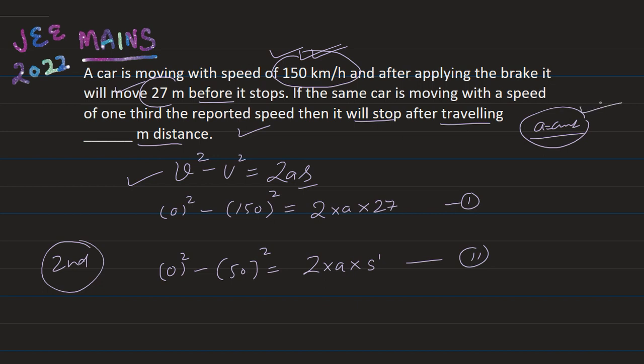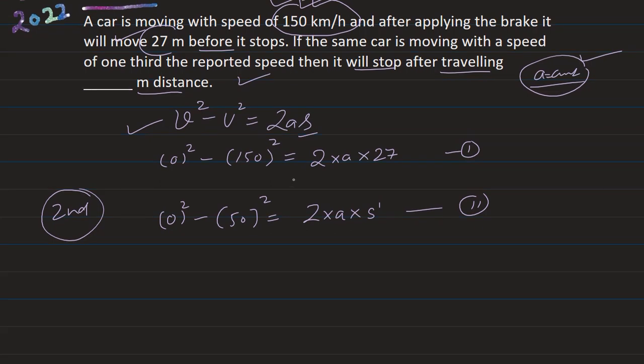Basically acceleration is the same in both cases. We have two equations and we will solve both by dividing. This becomes 50 × 50 divided by 150 × 150. Minus minus cancels. So we have 2a·s' over 2a·27. This will cancel and these zeros. So we will simply solve that.